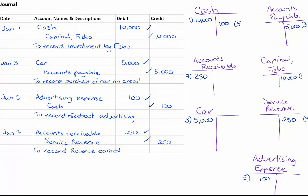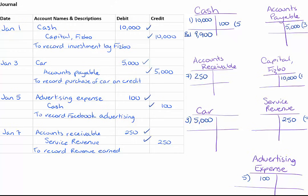We're going to go through each of the T's and calculate the balance in each account. I'm drawing a line indicating that after this line is what the balance is. For my cash account, I have one debit for $10,000 and a credit for $100. The net of those numbers — because I have a debit and a credit, I subtract them — and I get a debit of $9,900. Accounts receivable had only one transaction, so it remains a debit of $250. The car had only one transaction: a debit of $5,000.